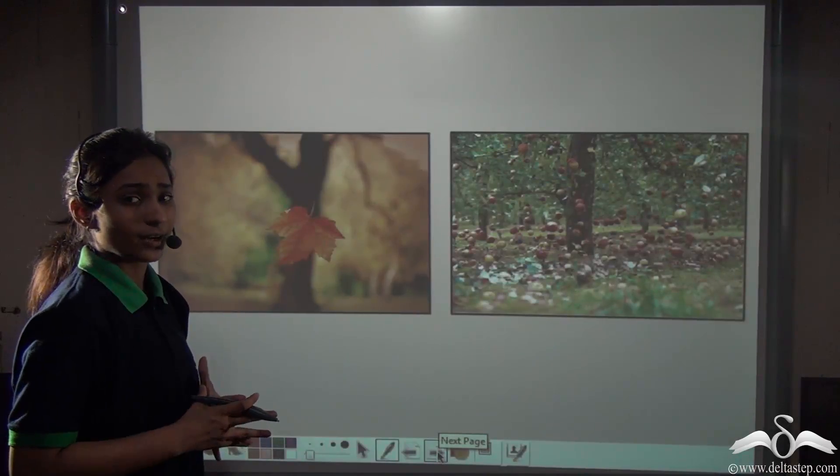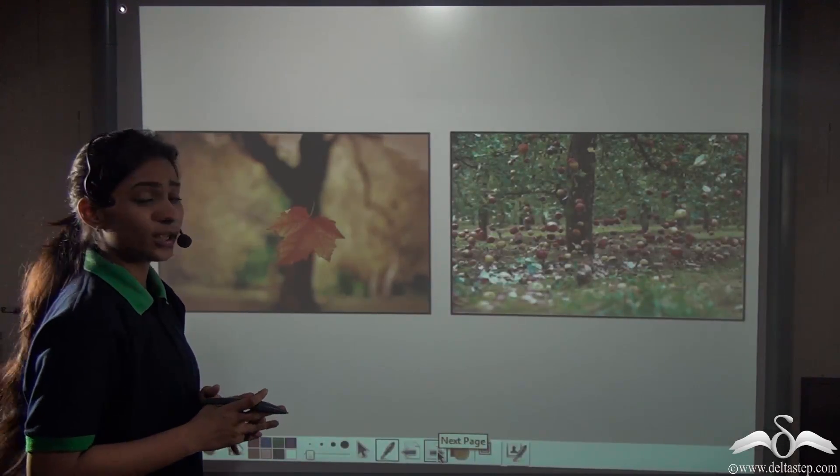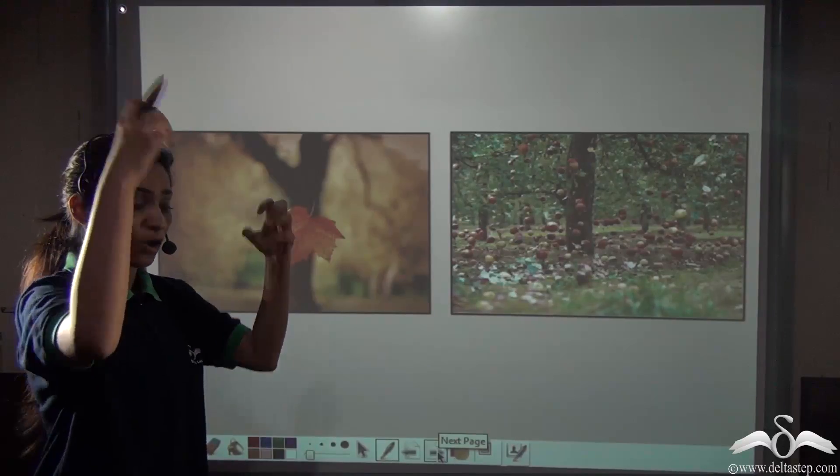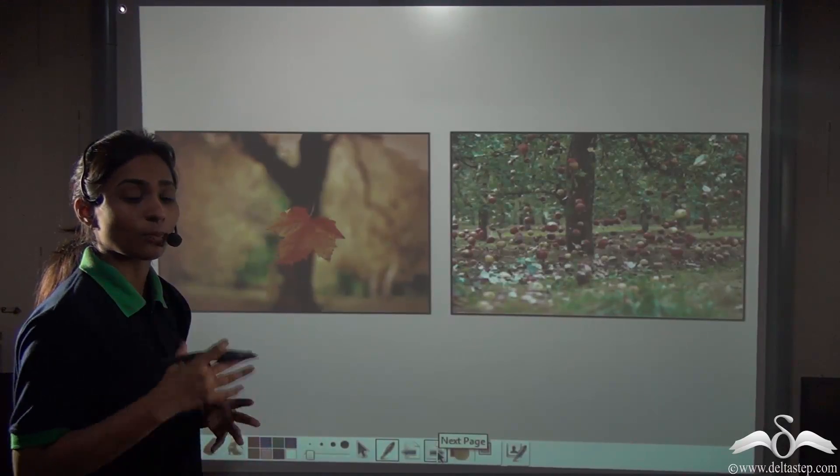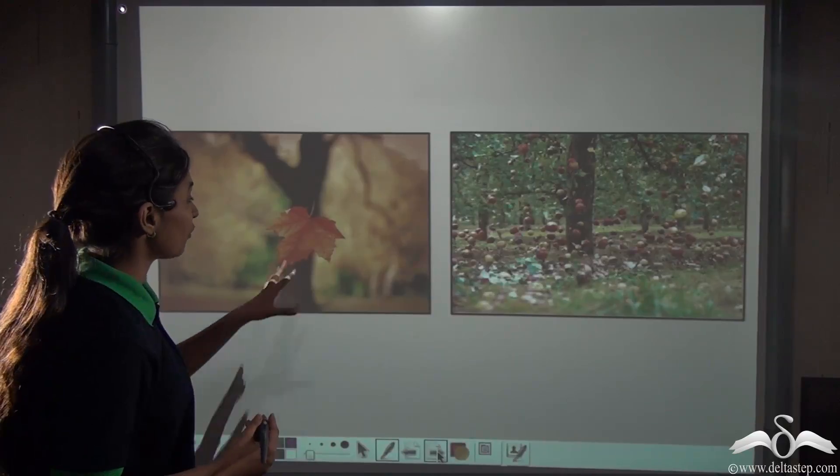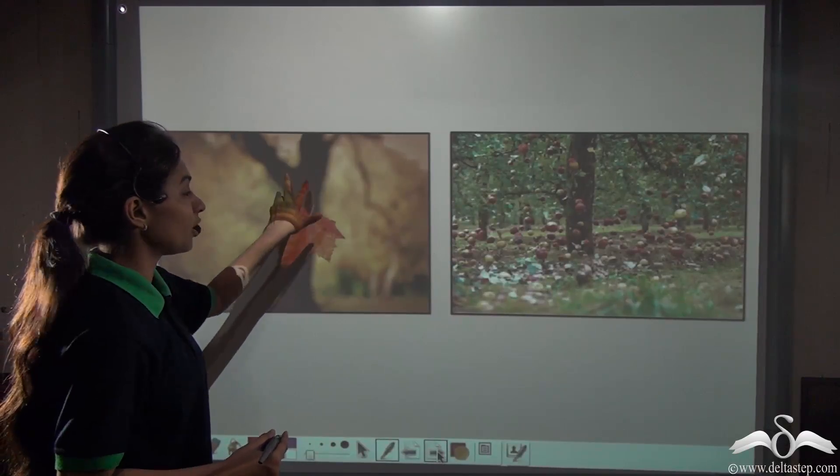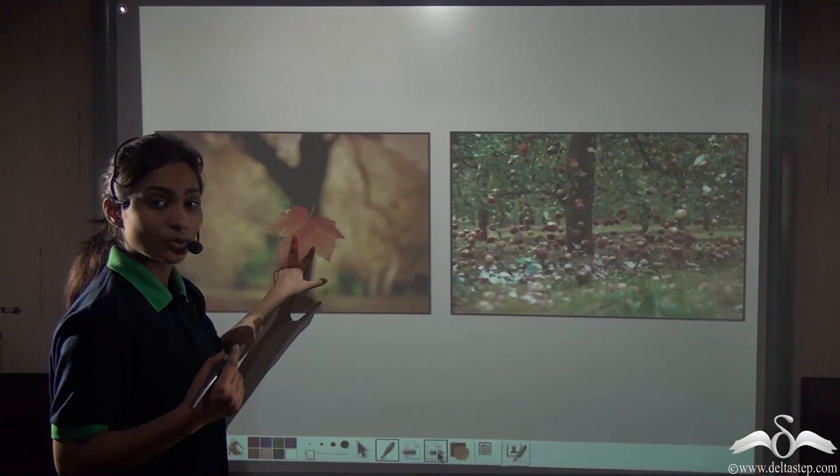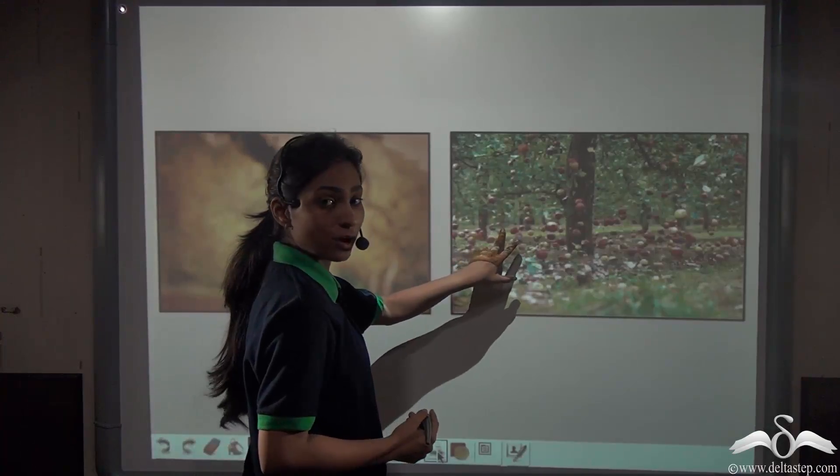But does that actually happen in real life? Do you think that a feather and a ball will fall at the same time on the floor if you drop them from above? No. In real life, a leaf falling from a tree takes more time to reach the ground than a fruit falling from a tree.